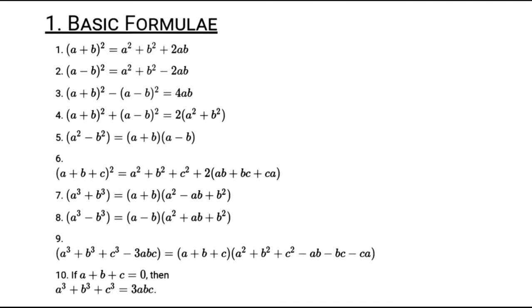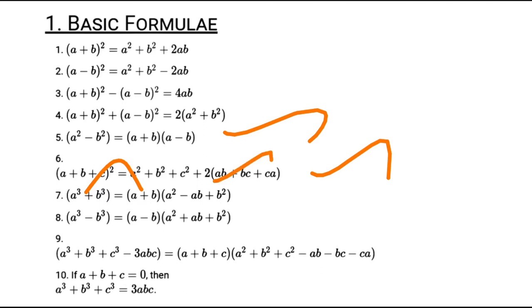Next: a²-b² equals (a+b)(a-b). Also, (a+b+c)² equals a² plus b² plus c² plus 2ab plus 2bc plus 2ca. Next: a³ plus b³ equals (a+b)(a²-ab+b²).